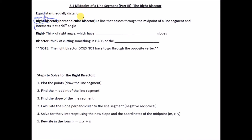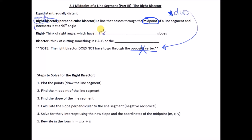To bisect means to cut in half. So the right bisector is a line that passes through the midpoint of a line segment and intersects it at 90 degrees. To be clear, this does not have to go through the opposite vertex. Think of a right angle — perpendicular lines have negative reciprocal slopes — and bisector means cutting something in half, or the midpoint.